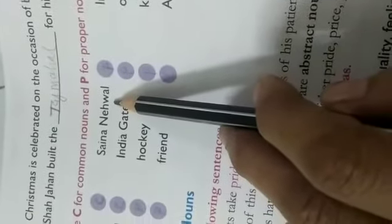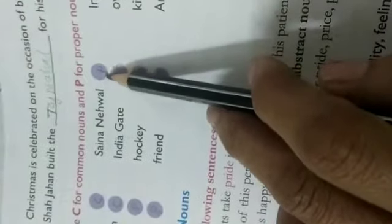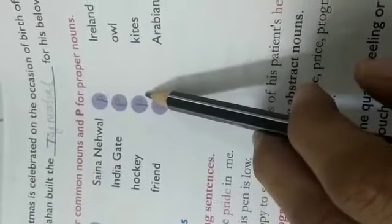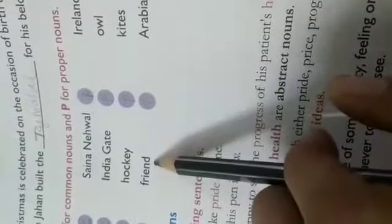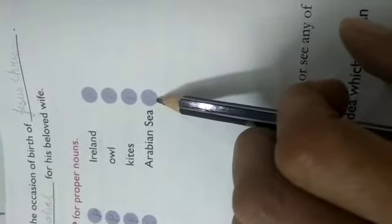Sania Newal किसी लड़की का नाम है — India की player का नाम है — तो proper noun। India Gate भी proper noun। Hockey भी proper noun क्योंकि game में hockey special नाम हो गया। 'Friend' — friend तो बहुत सारे होते हैं न, special कोई नाम लिखा नहीं — तो friend common noun। Ireland भी proper noun है। Owl — यह common noun। Kites मतलब पतंग है — एक वस्तु है — इसको हम common मानेंगे। Arabian Sea भी proper noun।